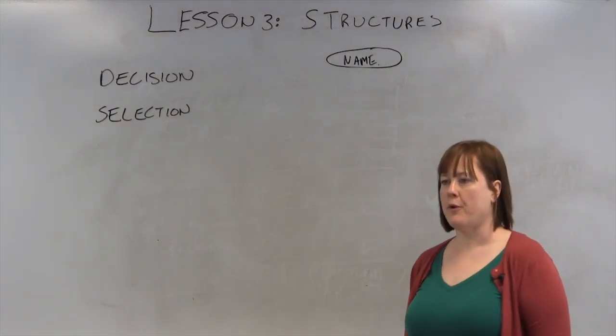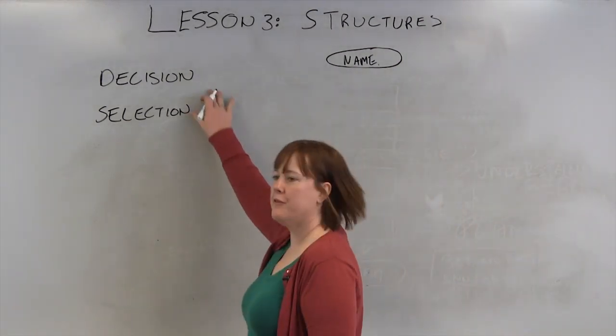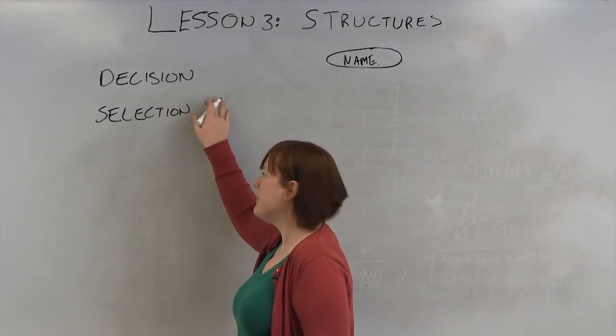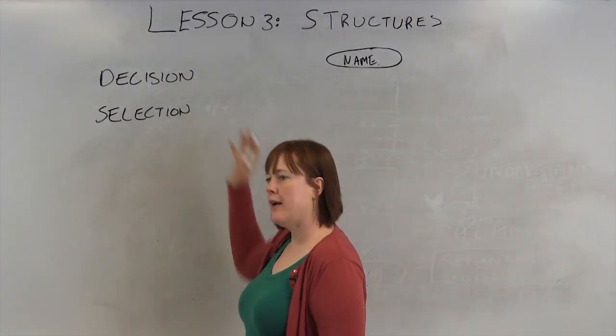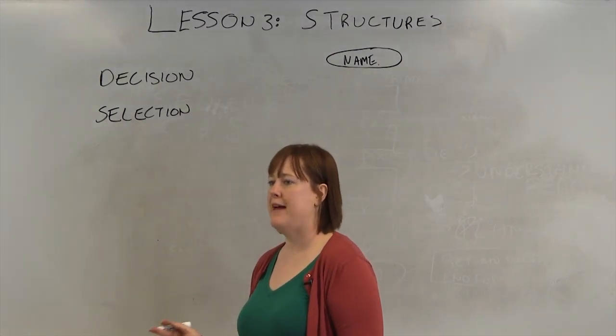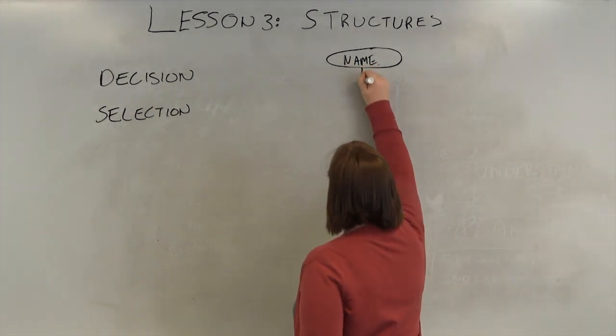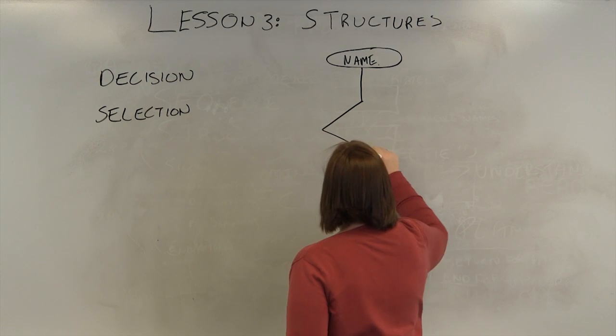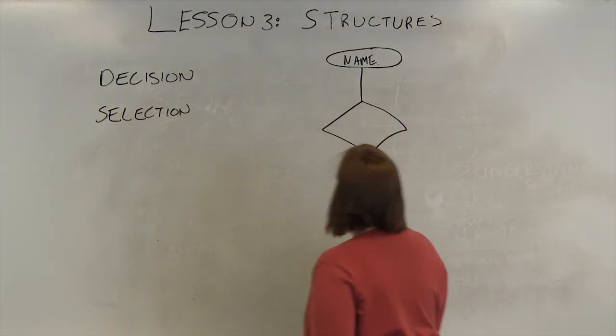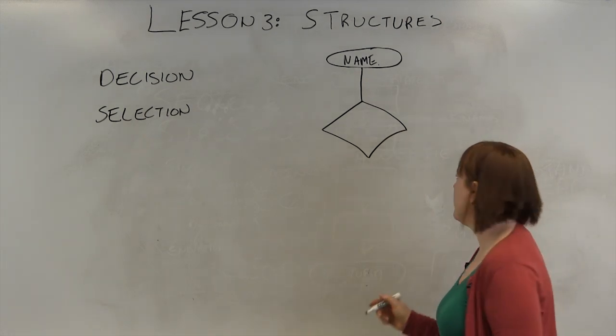The second structure for programming is the decision or selection structure. I'll use these two words interchangeably - they mean the same thing. When you're talking in programming code, they're usually referred to as an if-then statement. This is your decision symbol.